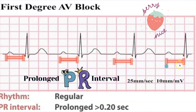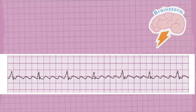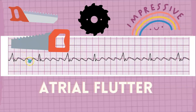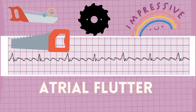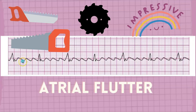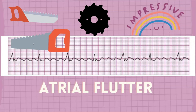This one is fairly easy to discern because of the type of P waves you see here. If you said atrial flutter, correct! Atrial flutter has this sawtooth pattern — boom, boom, look at that sawtooth pattern. It kind of looks like a dolphin fin or a shark fin — but what they call it is a sawtooth pattern.